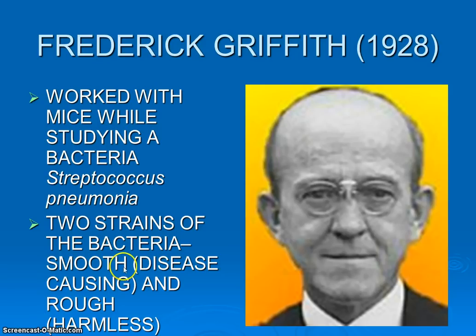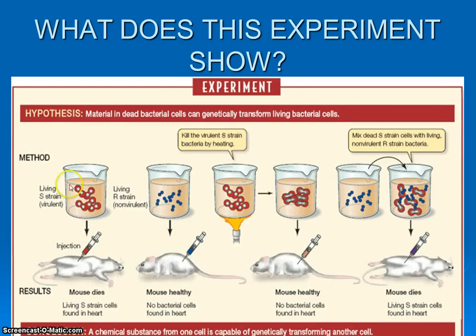So let's look at what Griffith did. He utilized mice. He injected the S strain — the harmful one — into mice, and the mice died. He found S cells inside the dead mice; the bacteria had reproduced and killed them. He then injected the R strain into a separate set of mice, and the mice were healthy — he didn't find any bacterial R strain cells. Then he heat-killed the S cells — those deadly ones — heated them up to kill them, and injected them into mice. The mice were fine; the dead cells were unable to reproduce.